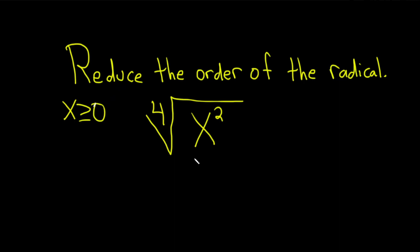The first step to reducing the order of this radical is to write it with a fractional exponent. There's a rule that says if you have the mth root of x to the n, that's the same thing as x to the n over m.